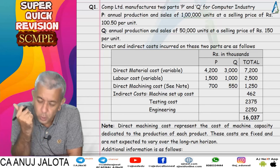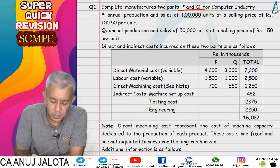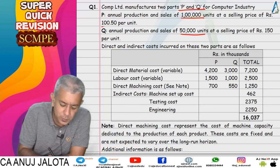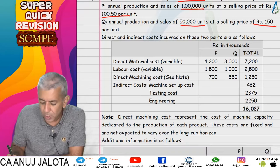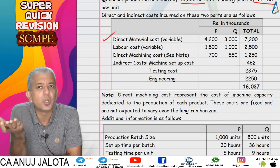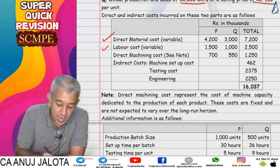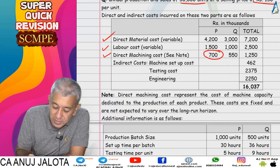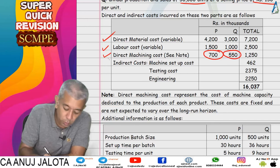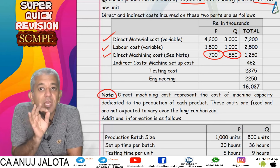Question number one: a company was producing two products P and Q. Production and sales in units were given, along with selling prices. In terms of cost, direct material cost was given for P and Q separately, as this is a direct cost. Labor cost and direct machining cost were also given — the machining cost represents the cost of products going through the machine.